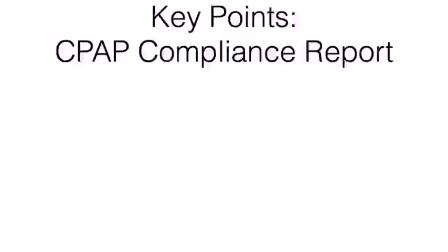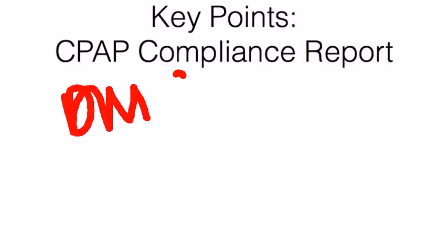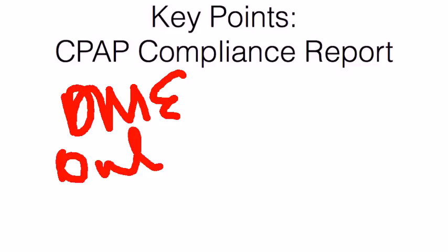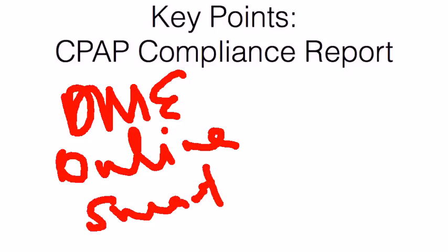The first way you can get the CPAP report is from the DME company. The next is you can go to the online portal set up by the equipment manufacturers themselves. And the third way is from the smart chip itself — most patients can bring in that smart chip, and you can get the smart chip readers from the equipment manufacturers.